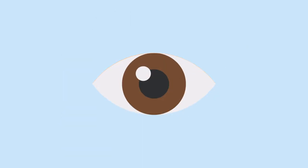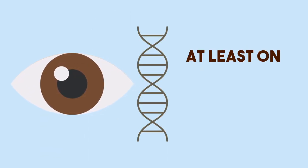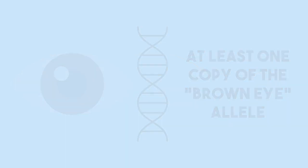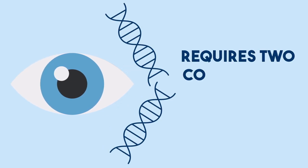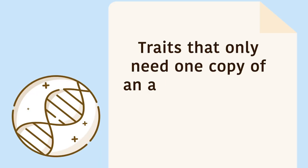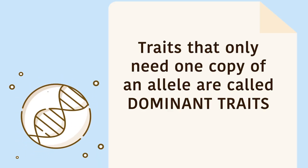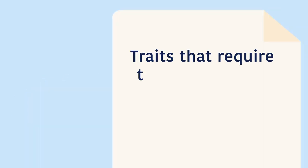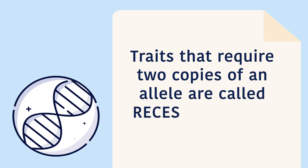Some traits, such as having brown eyes, require you to have at least one copy of the brown eye allele. Other traits, such as having blue eyes, require you to have two copies of the blue eye allele. Traits that only need one copy of an allele are called dominant traits, whereas traits that require two copies of an allele are called recessive traits.